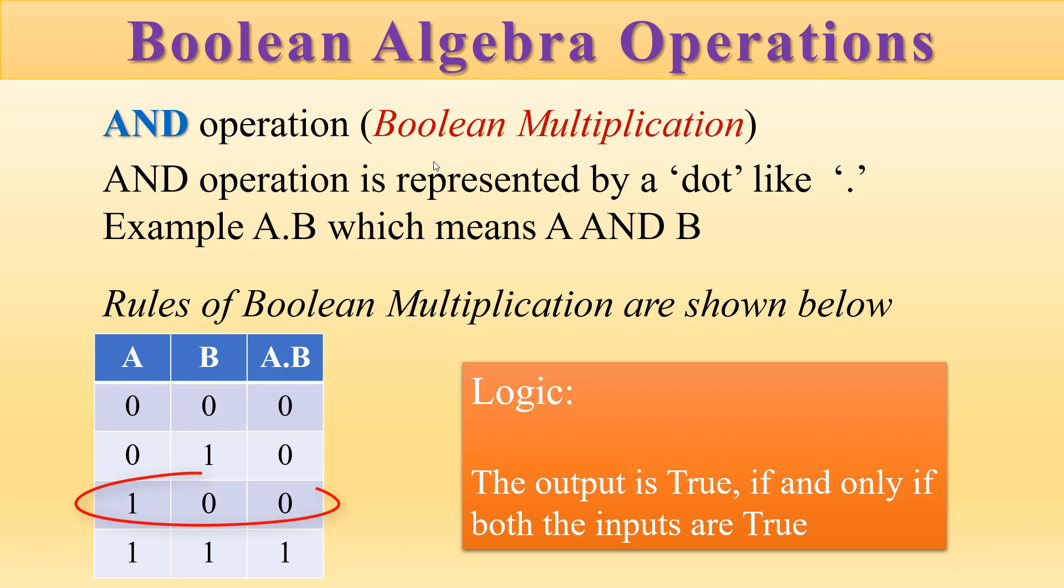And if A is 1 and B is 1, then only the value of A dot B becomes 1.